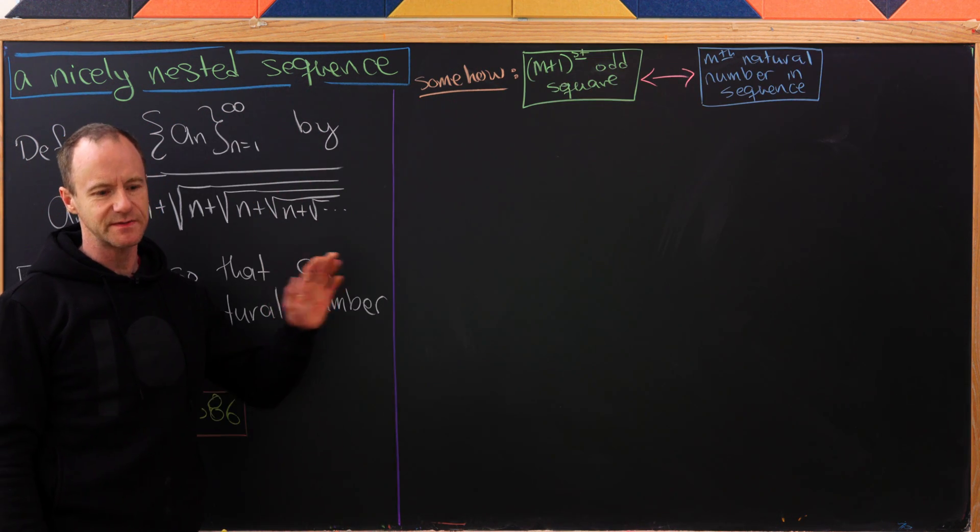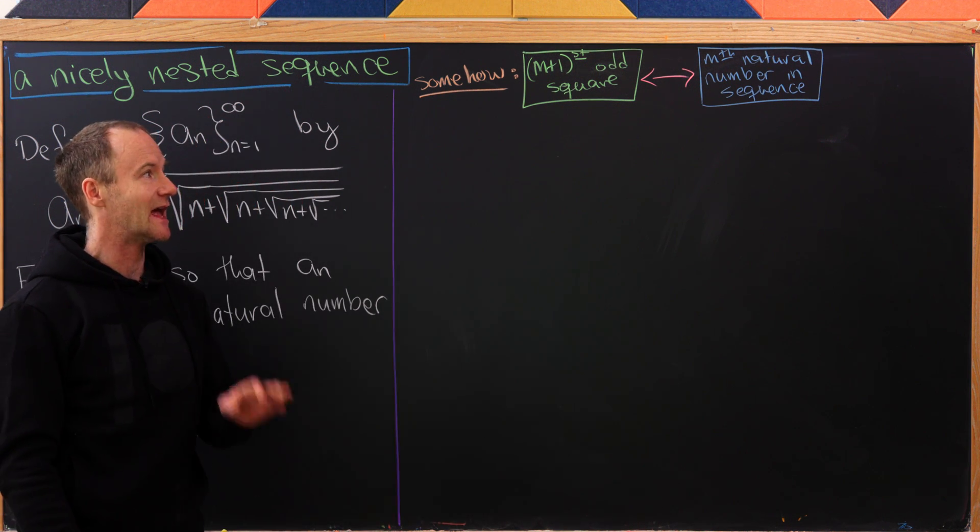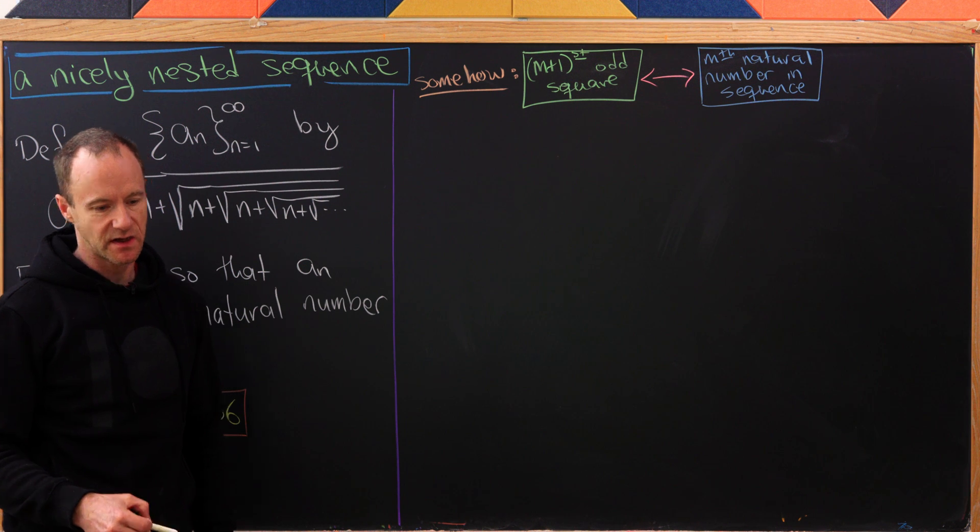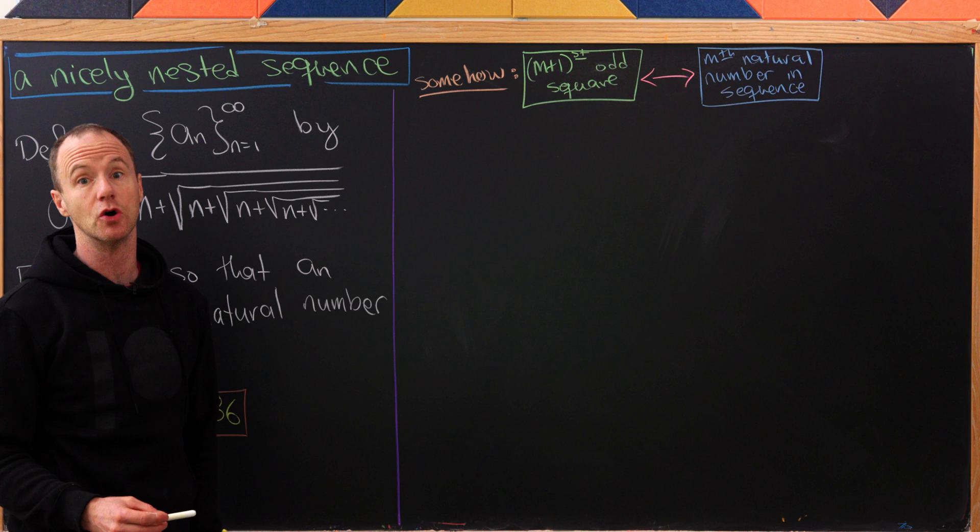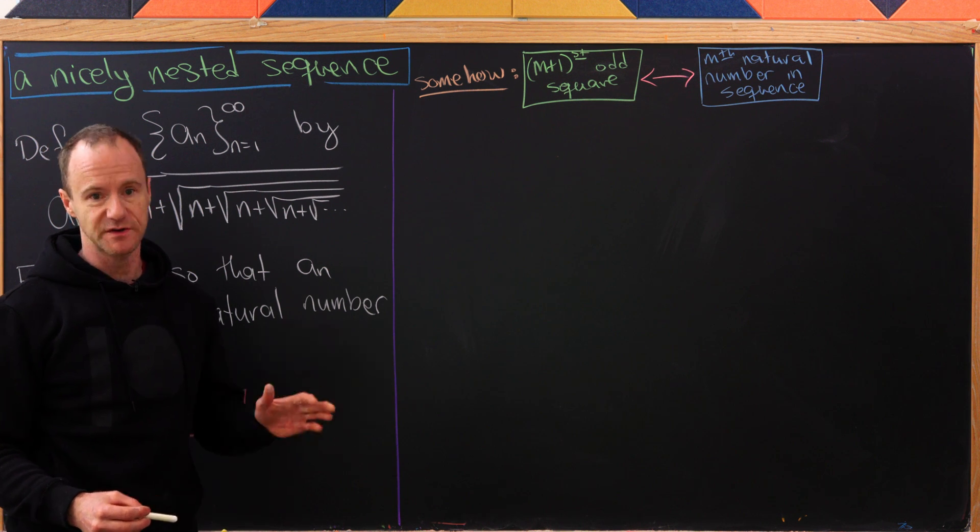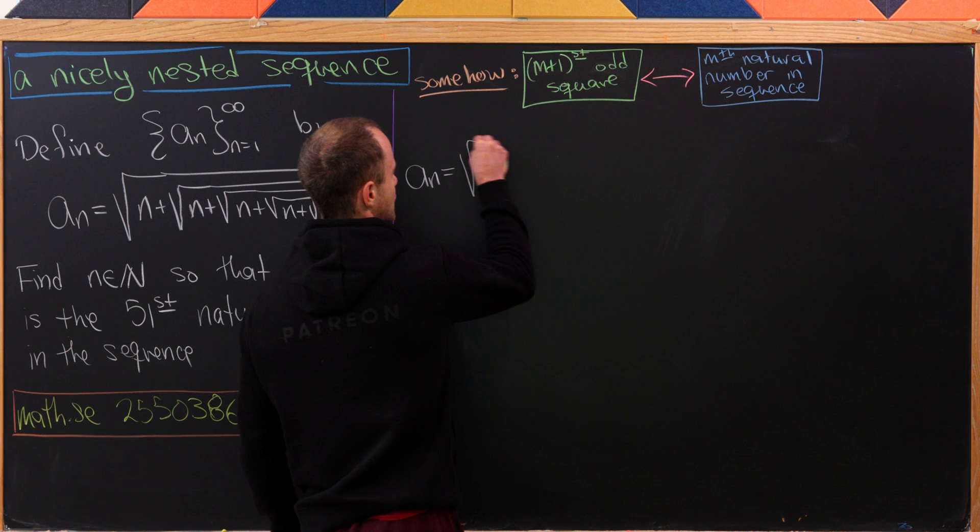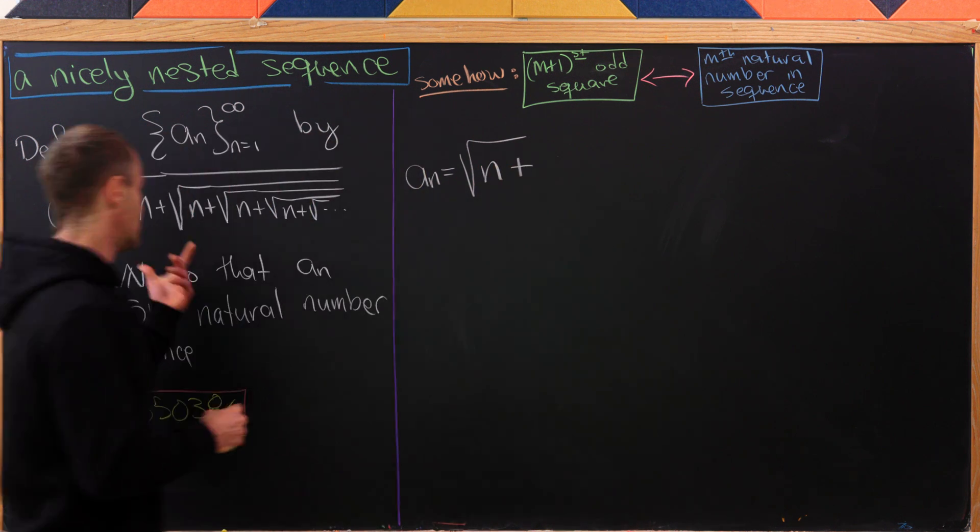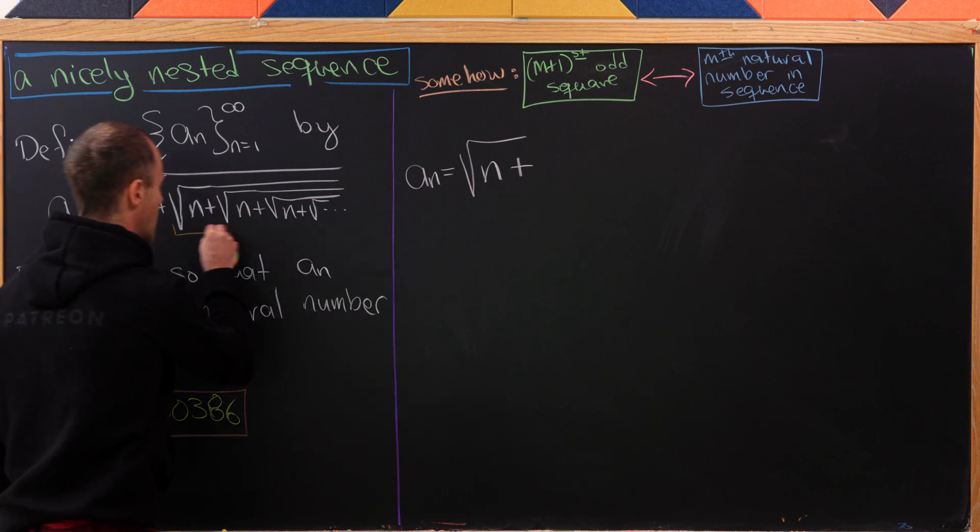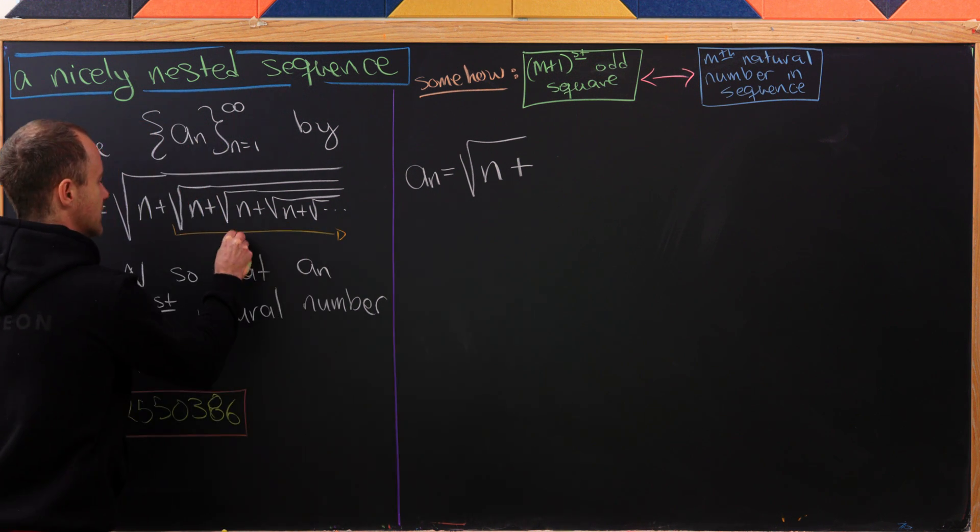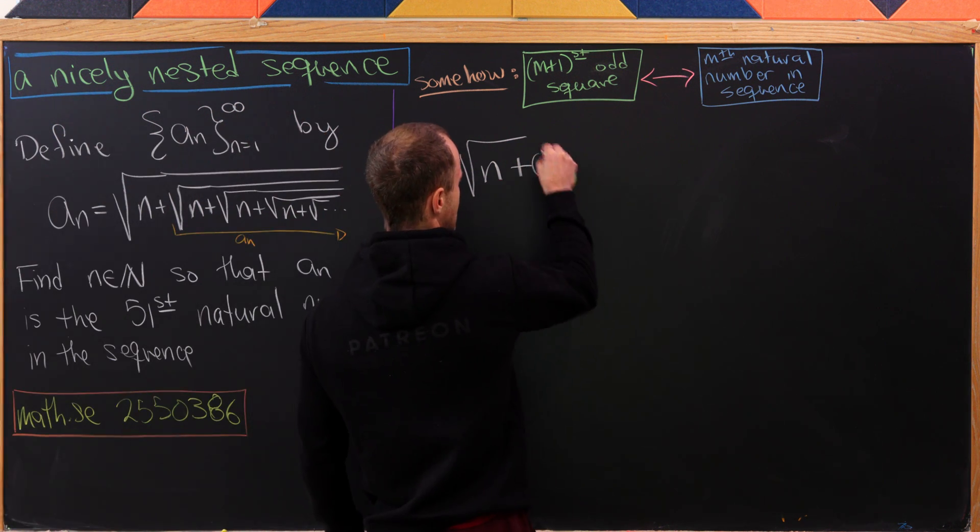Somehow it seems like there's a correspondence between the (m+1)st odd perfect square and the mth natural number in this sequence. Now let's play that game of using our recursion to find a closed form for the terms of our sequence, but in general. Let's rewrite a_n as the square root of n plus, and we'll do the same observation. We're chunking all of this and noticing that this is a_n itself.